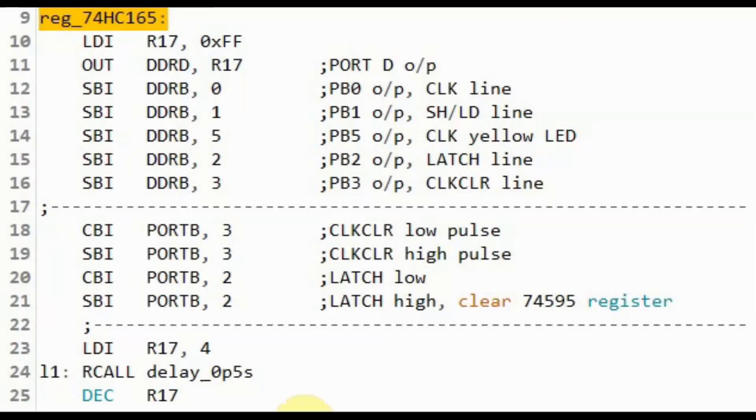Inside the assembly code, we initialize port D as output and we save the output. We set pin PB0 as output which is the clock line for both 74165 and 74595.